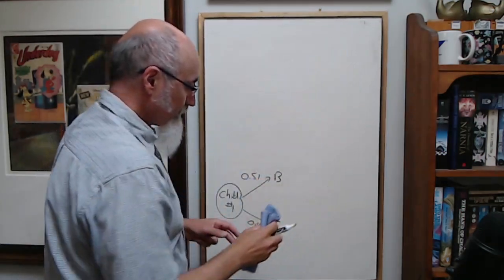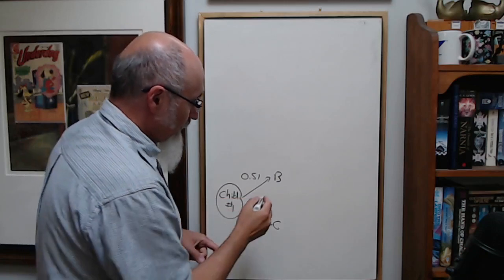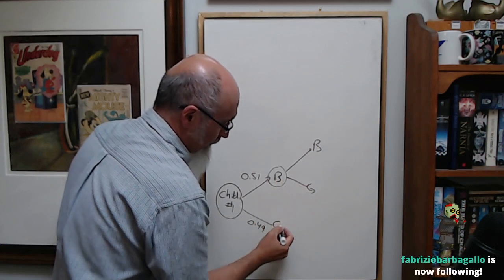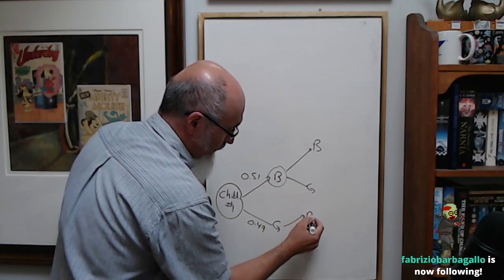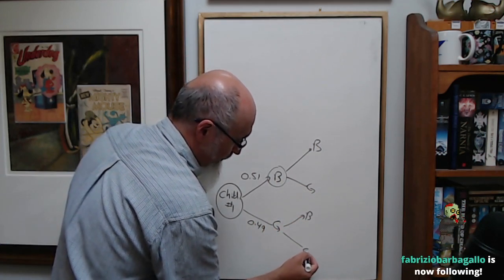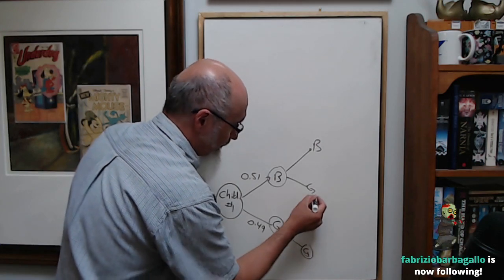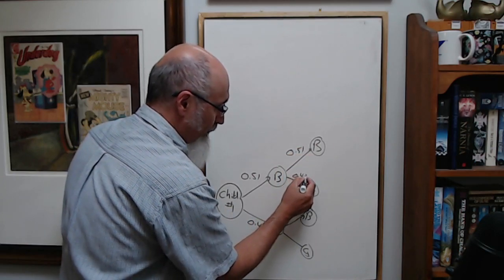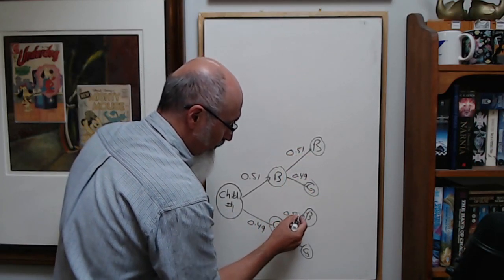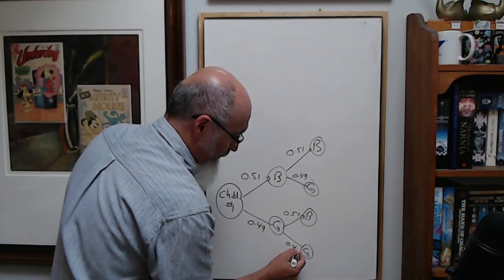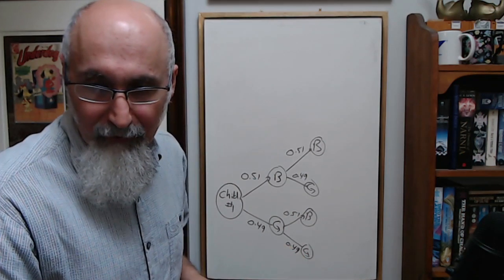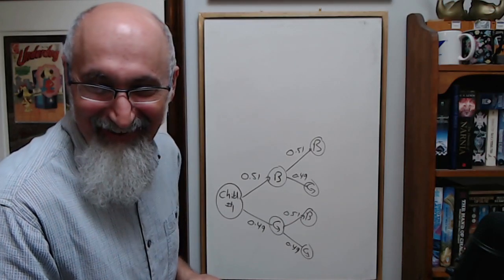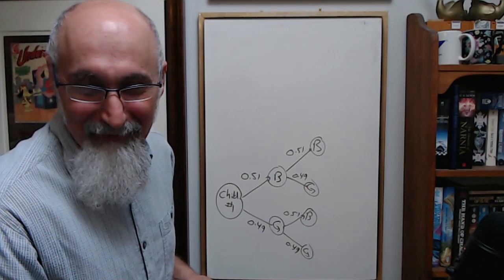So the next one you can have a boy, you can have a girl, you can have a boy, you can have a girl, right? Again, the boy is 0.51, the girl 0.49, the boy's 0.51 and the girl is 0.49. I can actually do this question officially.